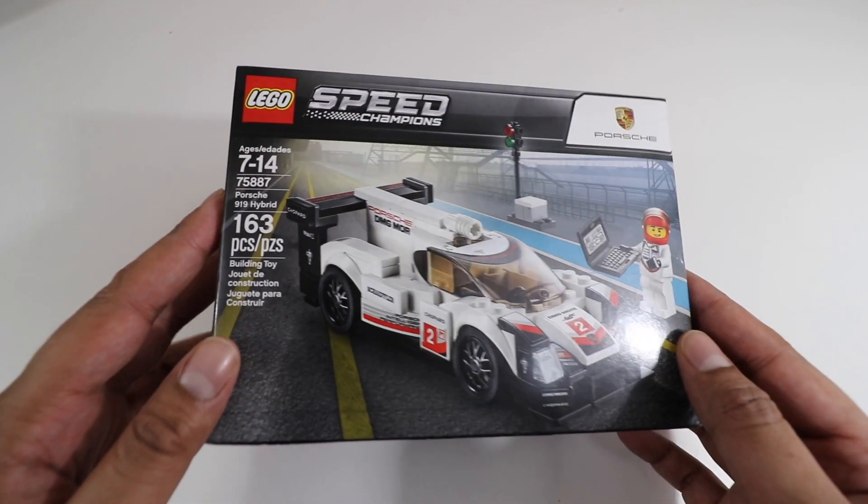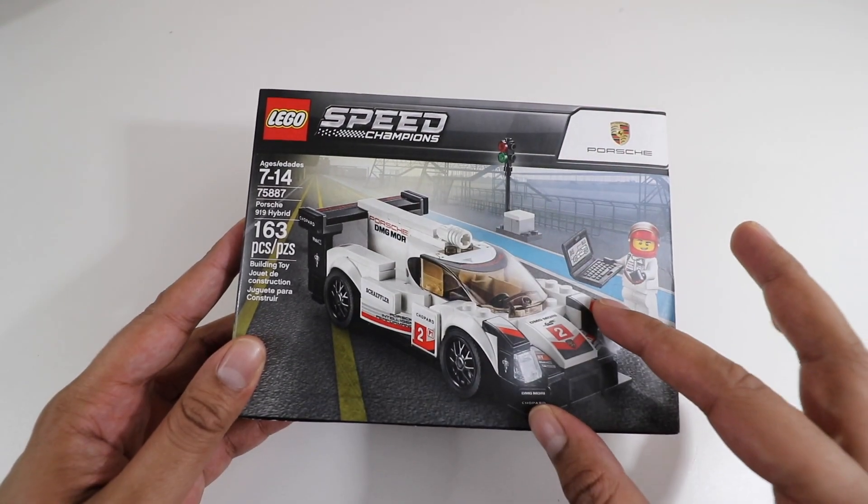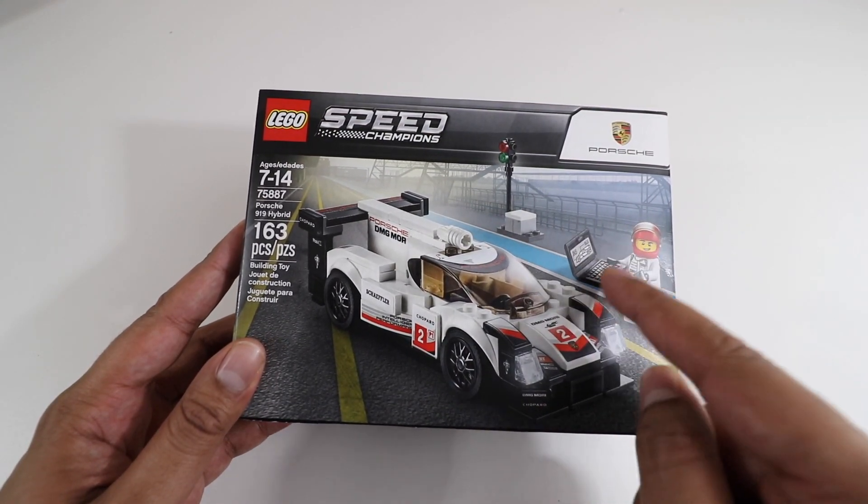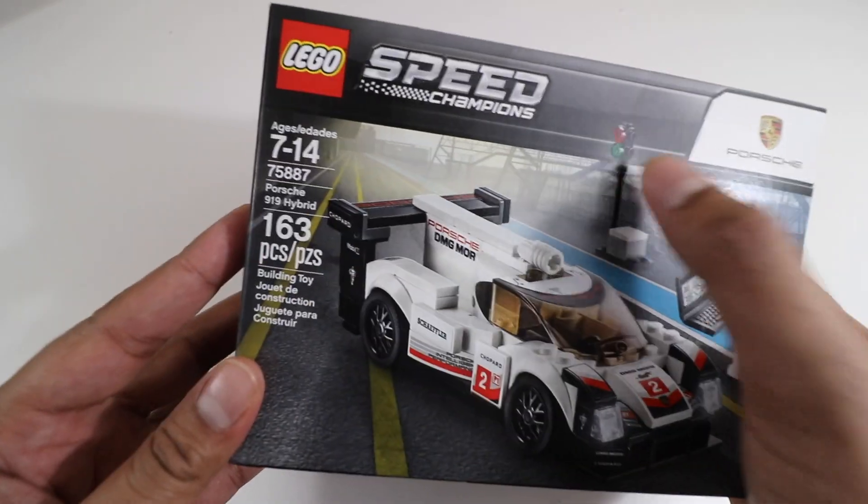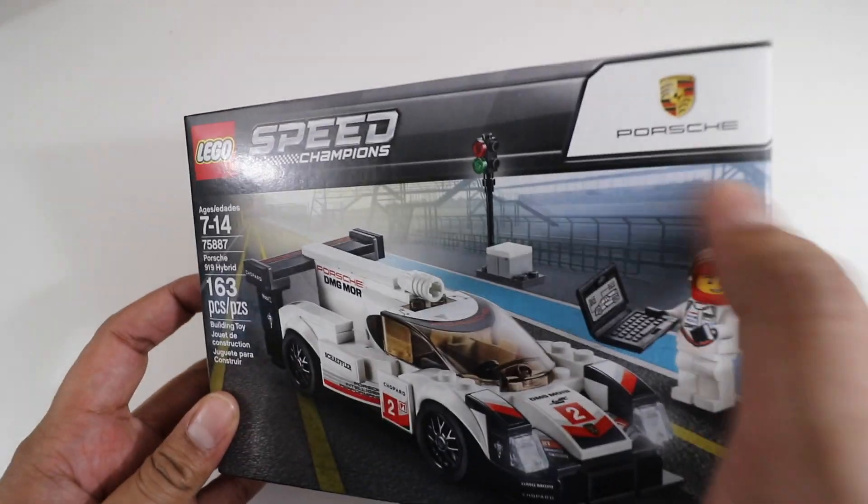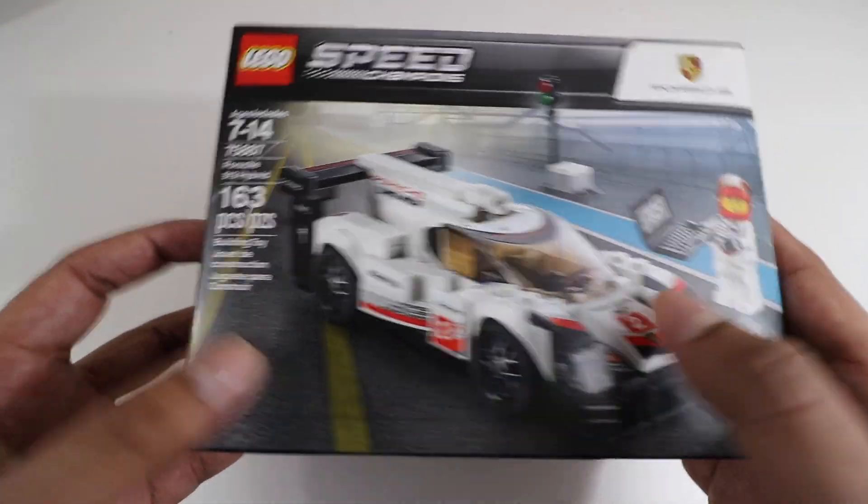Alright so this here is our Porsche 919 Hybrid. It's actually a pretty cool looking box. You see the car here on the cover, as well as a character that comes with it, and it looks like he has a laptop as well, kind of looking like he's working on the car. And then you have a stop and go light over there as well. Now it is licensed by Porsche, and I actually really like the style of this car. It really does look like a cool looking race car as well.